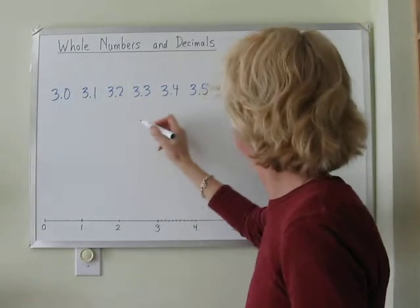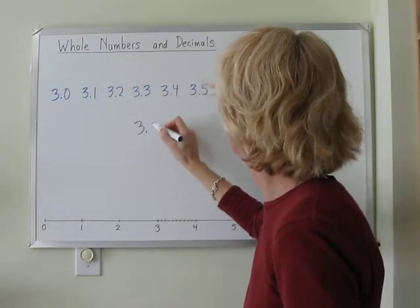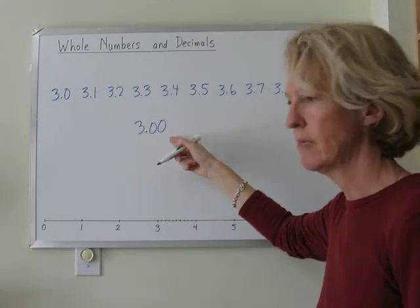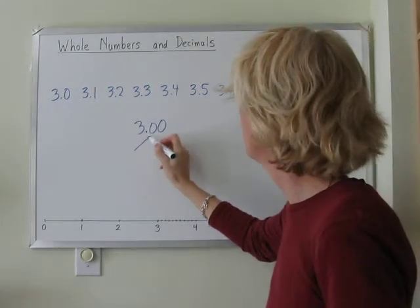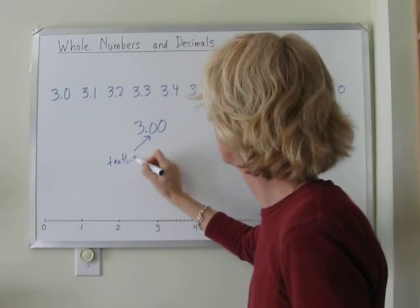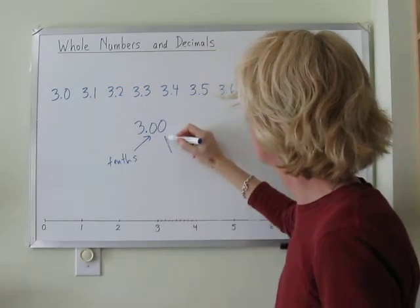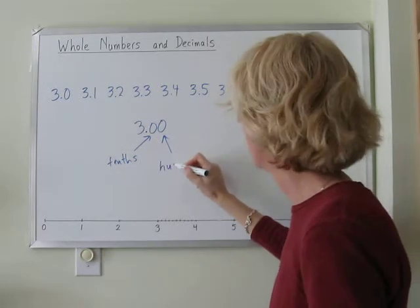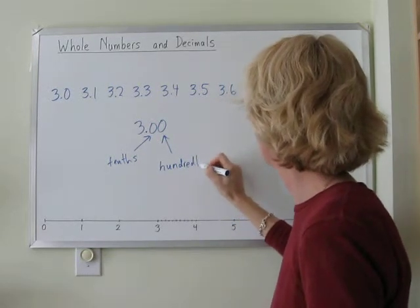What if we have two decimal places? Three decimal places. The first one is the tenths. And the second one is for hundredths.